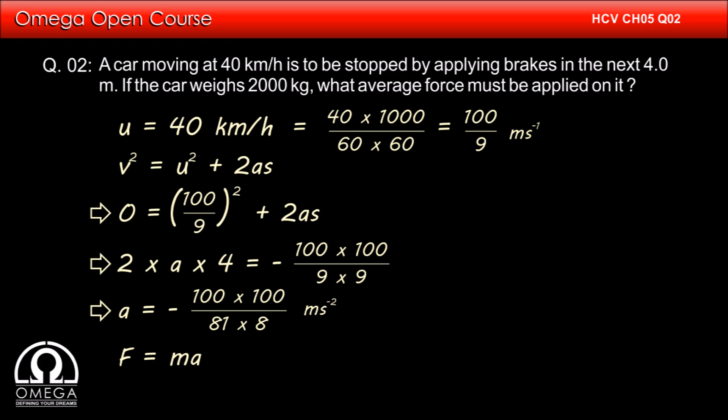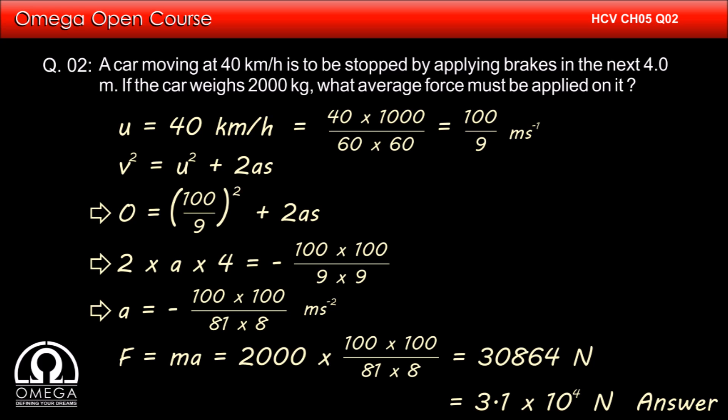Now, the force applied equals mass times acceleration. Putting the values, we get 2000 times 100 times 100 divided by 81 times 8, which is 30,864 newtons or 3.1 times 10 to the power 4 newtons. This is our answer.